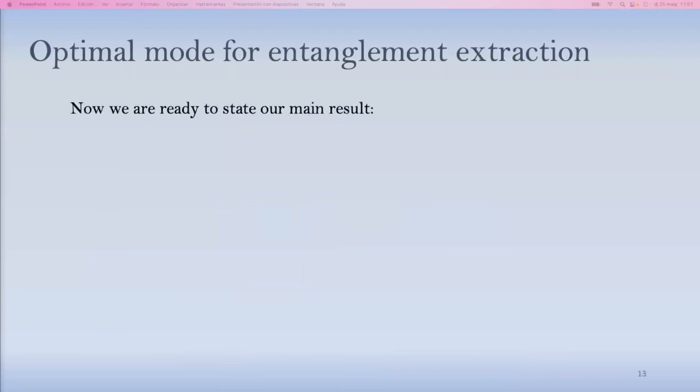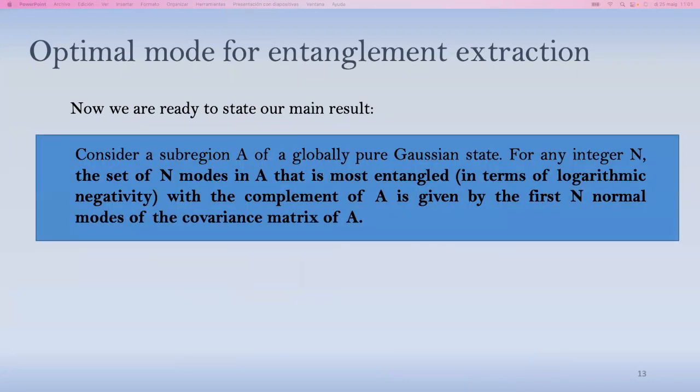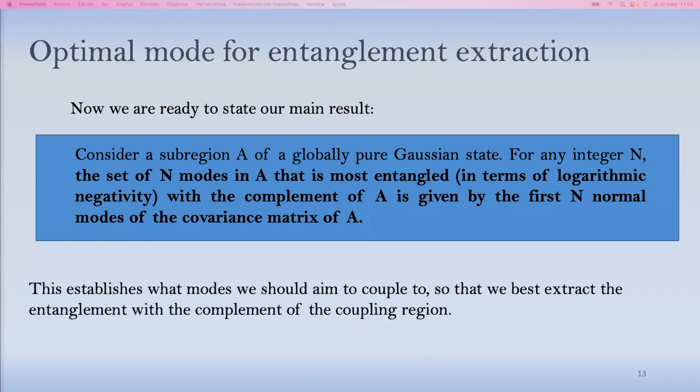Now, with all of that, I'm ready to state the main results that I want you guys to take away from this talk, which is the following. Consider a sub-region A of a globally pure Gaussian state. So imagine you have A and its complement A-bar, and the statement is that for any integer n, counting the number of modes that you have access to, the set of modes that is most entangled with the complement of A is given by the first n normal modes, counting here in terms of the highest symplectic eigenvalue to lowest, of the covariance matrix of subsystem A. And this establishes what modes we should aim to couple to in order to best extract the entanglement with the complement of the region A that you're originally coupling to.